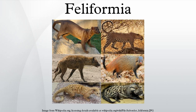Many feliforms have retractile or semi-retractile claws and many are arboreal or semi-arboreal. Feliforms also tend to be more digitigrade. In contrast, most caniforms are terrestrial, have non-retractile claws and tend to be plantigrade. There are 7 extant families, 12 subfamilies, 56 genera and 114 species in the Feliformia suborder.